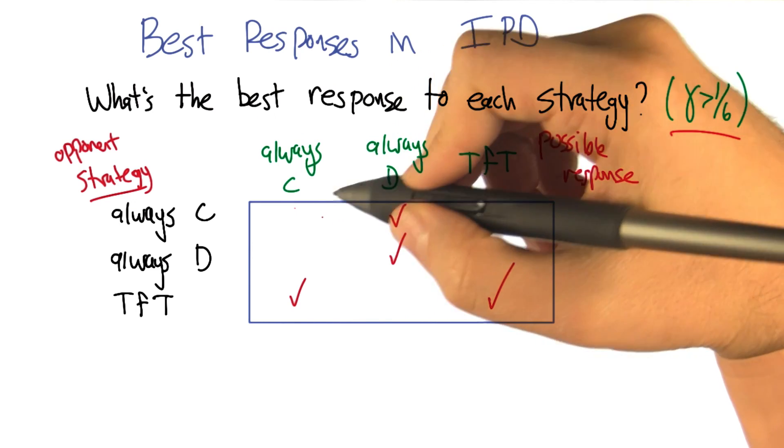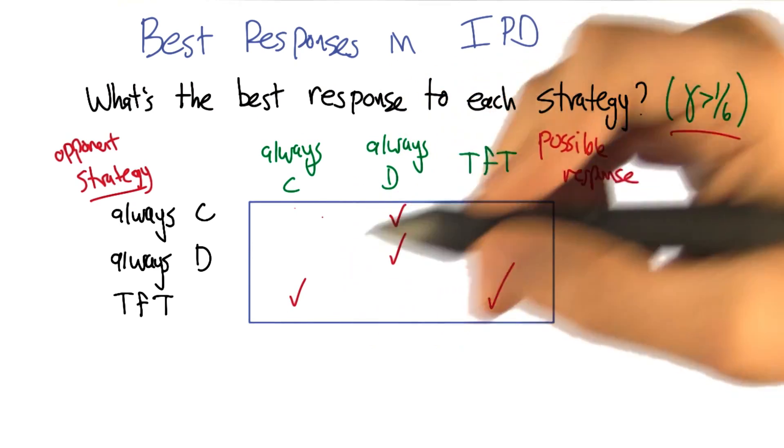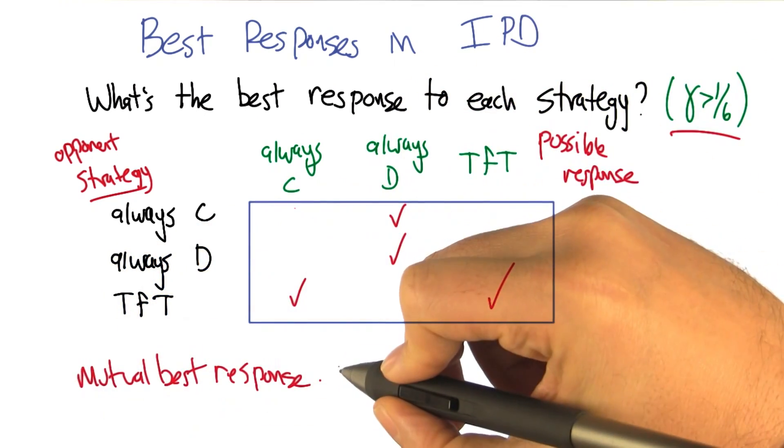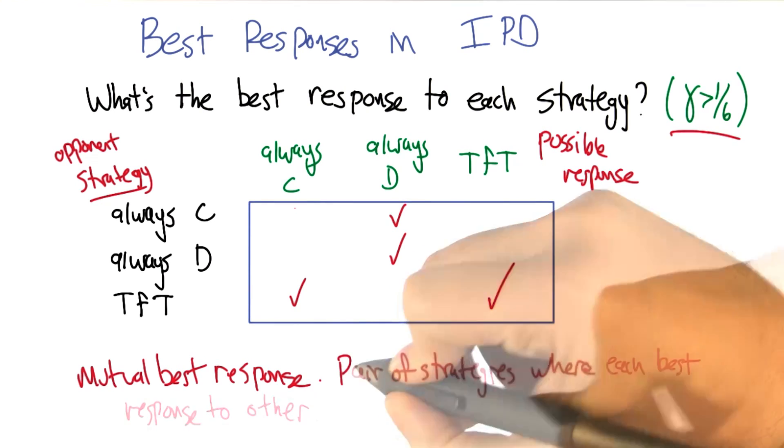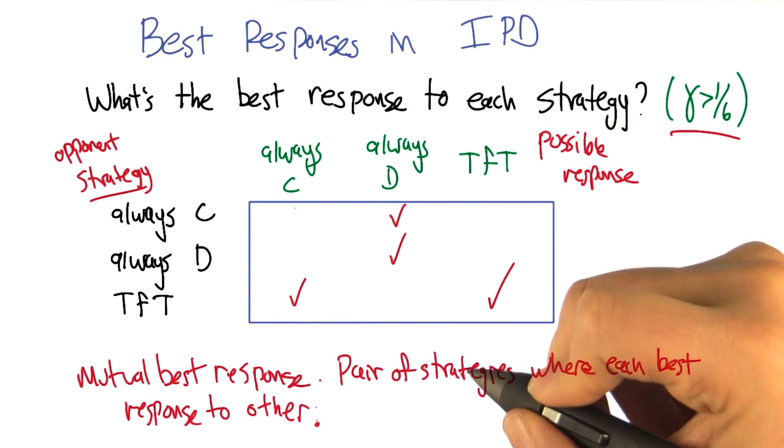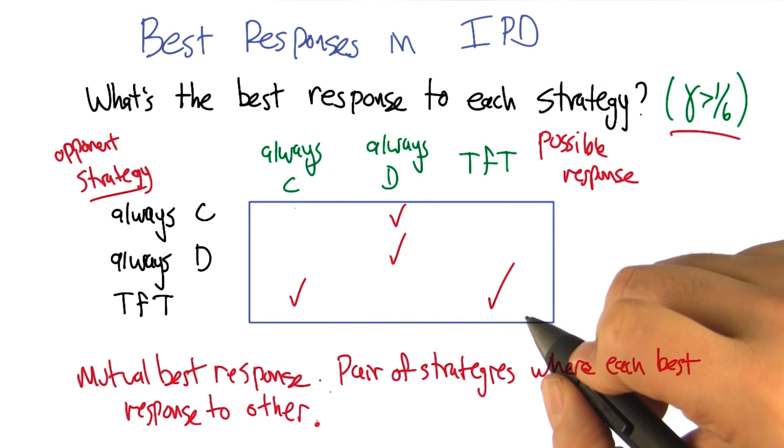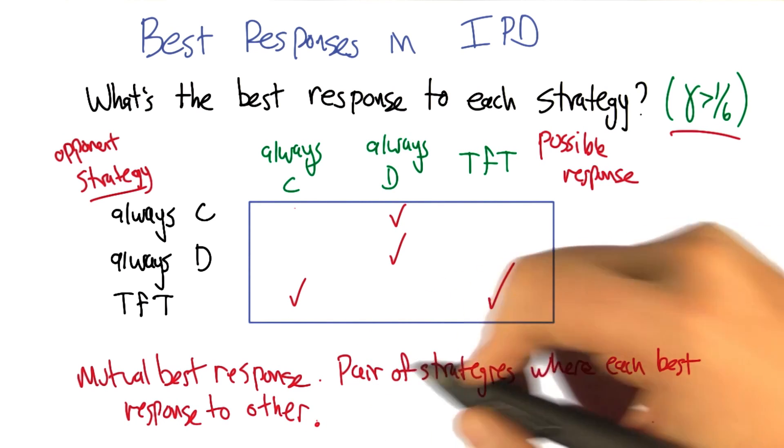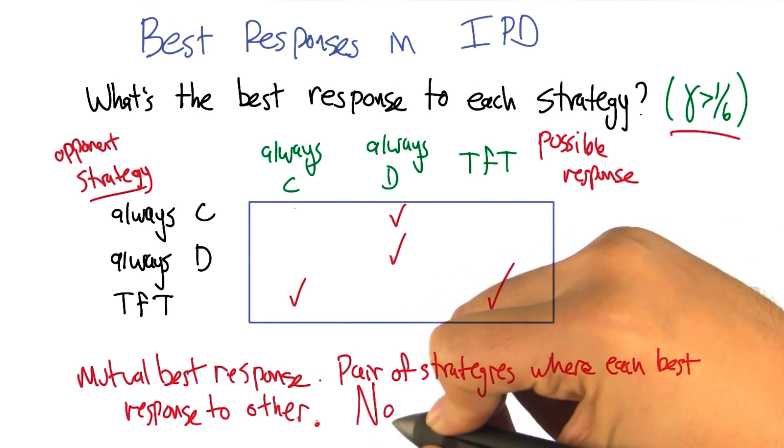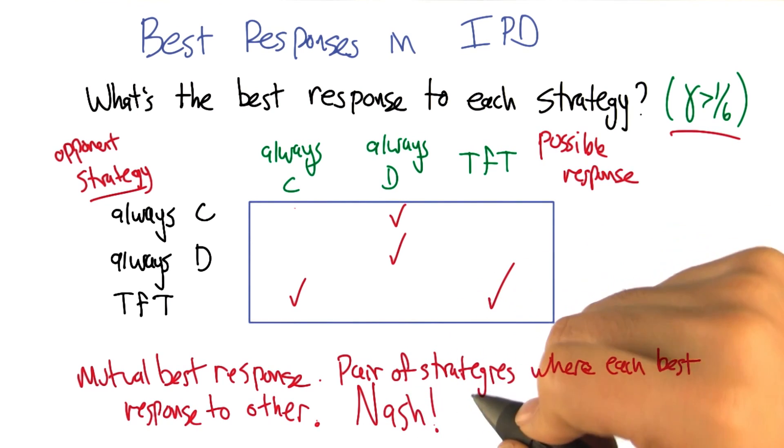And that's kind of interesting. If you think about mutual best responses. Yes. So that's a strategy that, a pair of strategies, where each is the best response to the other. There's another name for that. Do you remember? No. You told us what it was. Yeah, but I'd probably use different words.